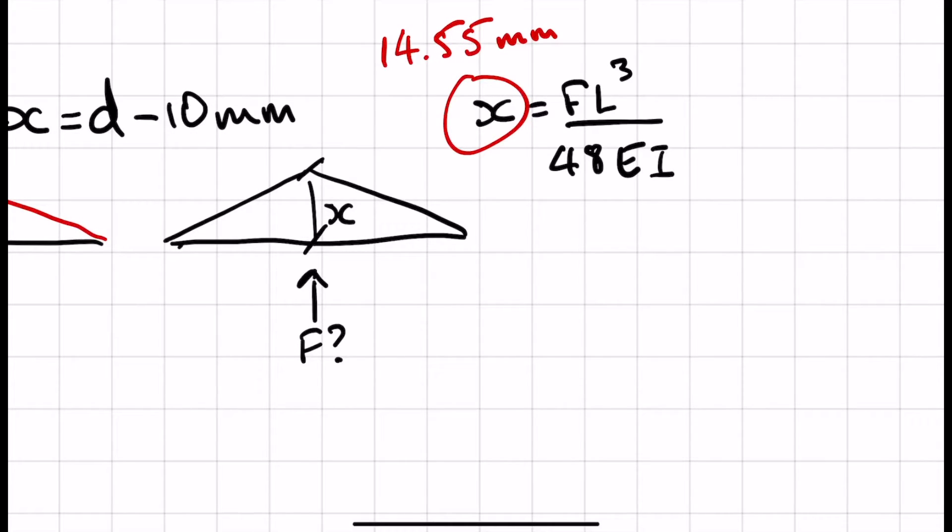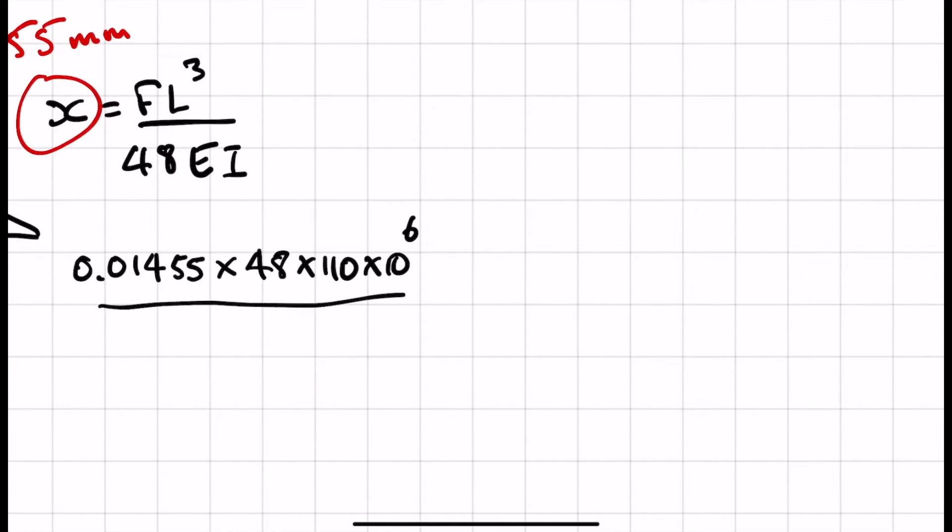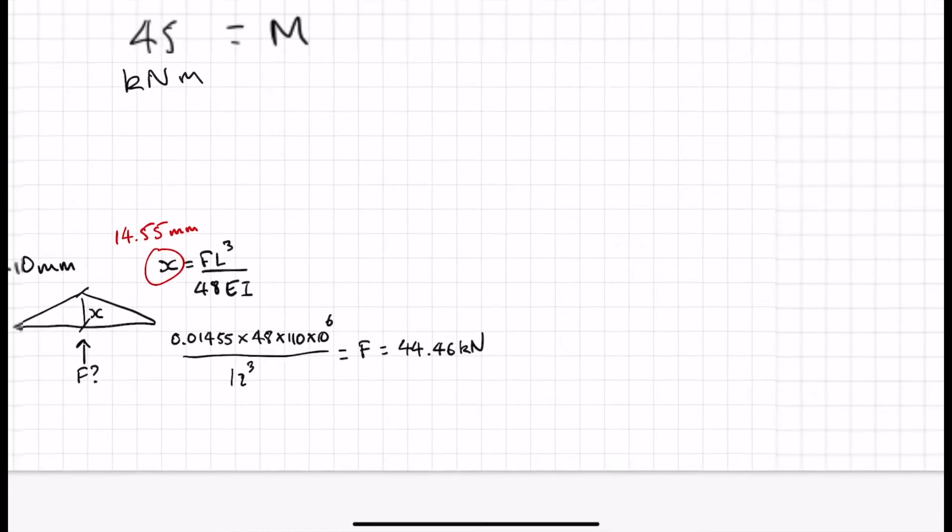So we now need to equate X to be 14.55 millimeters or 0.01455 meters. Okay, so we know the values of 48. Well, 48 is 48. EI is 110 times 10 to the sixth. L we know. So let's do that then. So we've got 0.01455 times 48 times 110 times 10 to the sixth, all over 12 cubed. And that's our F. So F is equal to 44.46 kilonewtons.